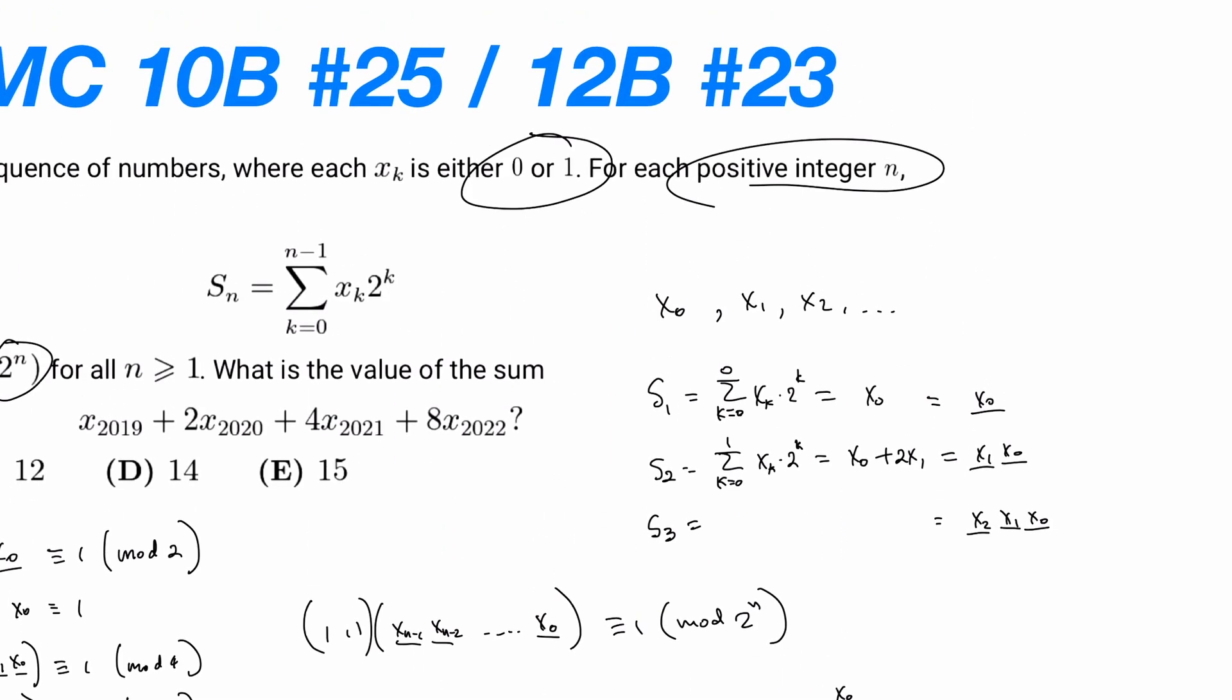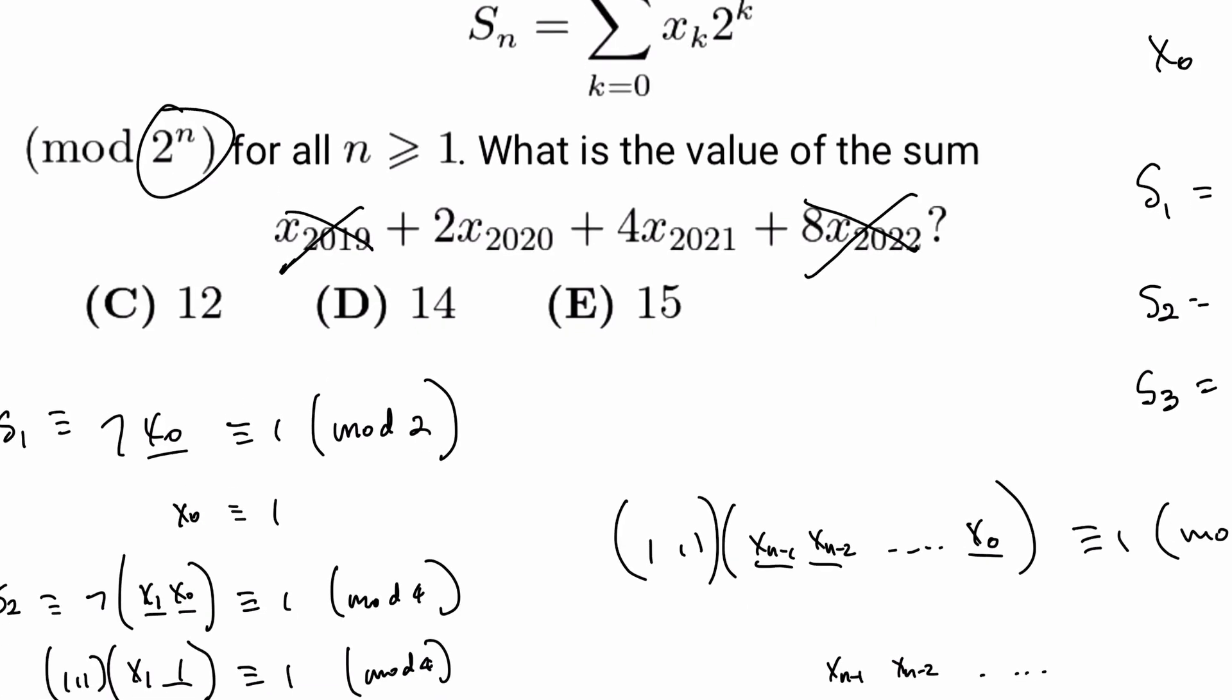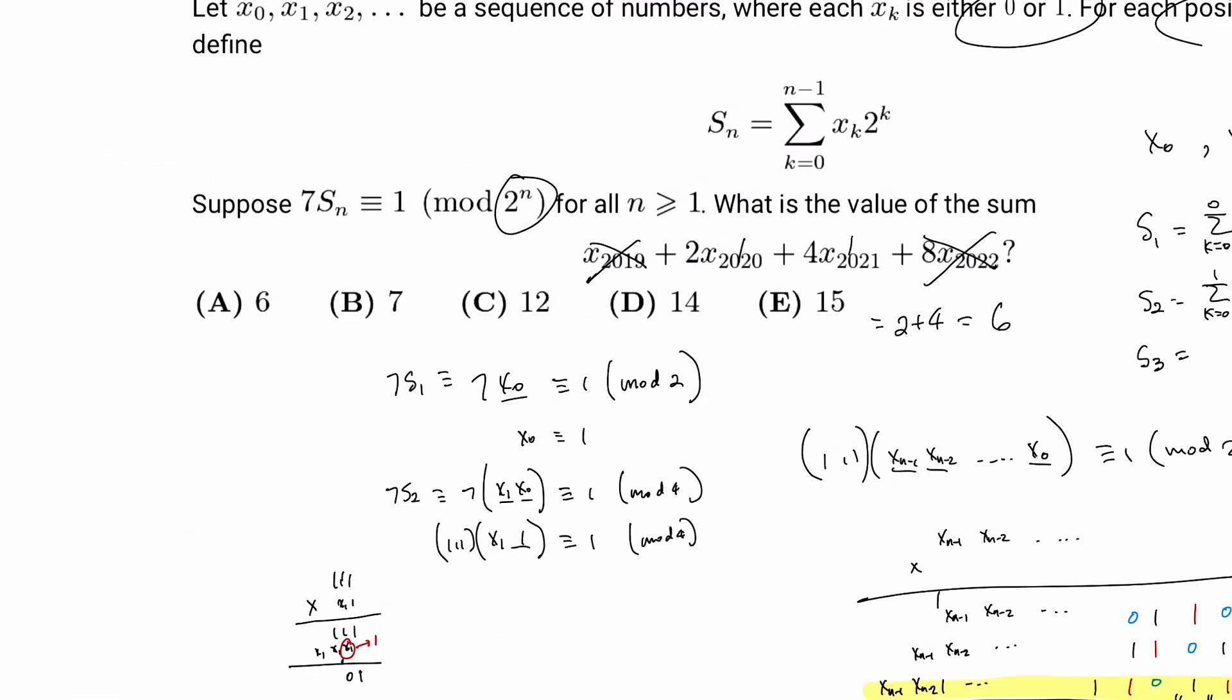So let's turn back to our original expression. We know 2019 is divisible by 3 and 2022 is divisible by 3. So those are 0s. And this is a 1, this is a 1. So our answer is going to be 2 plus 4. Don't make a silly mistake on that, which is equal to 6. So our answer is going to be A.